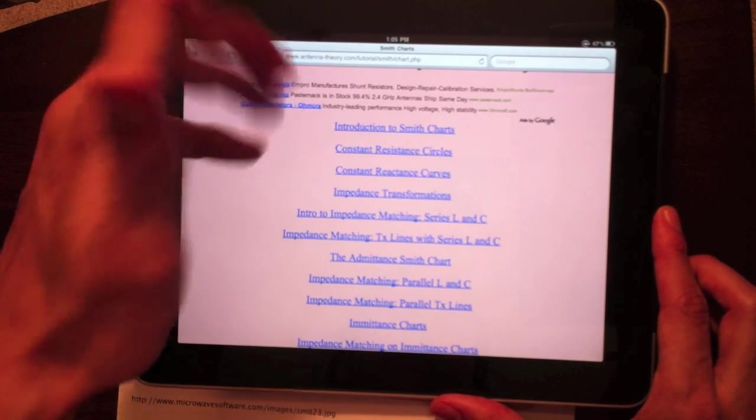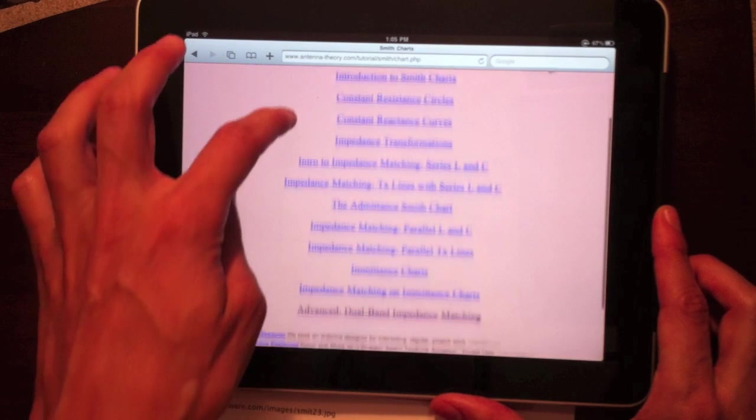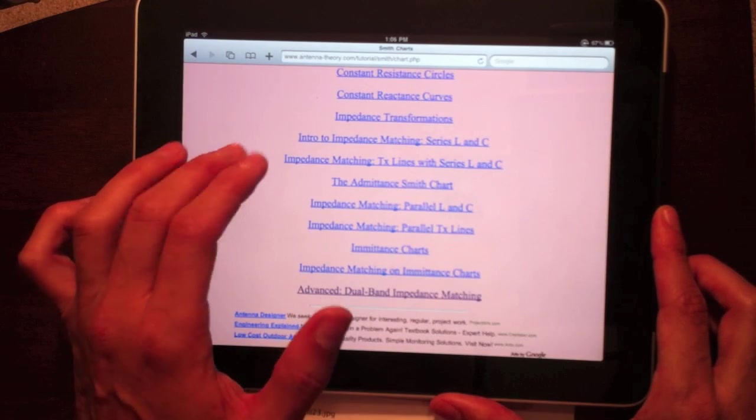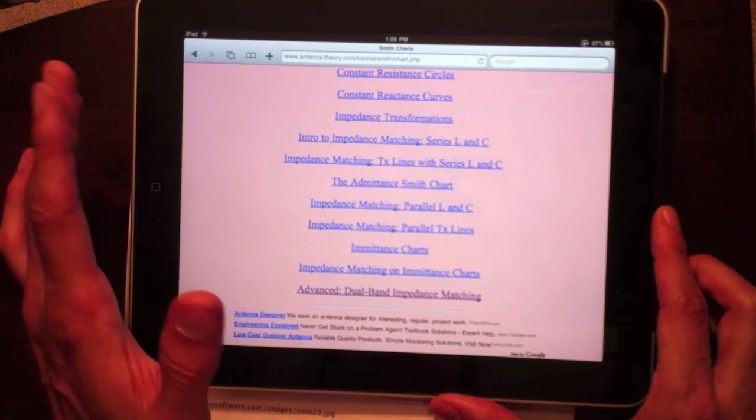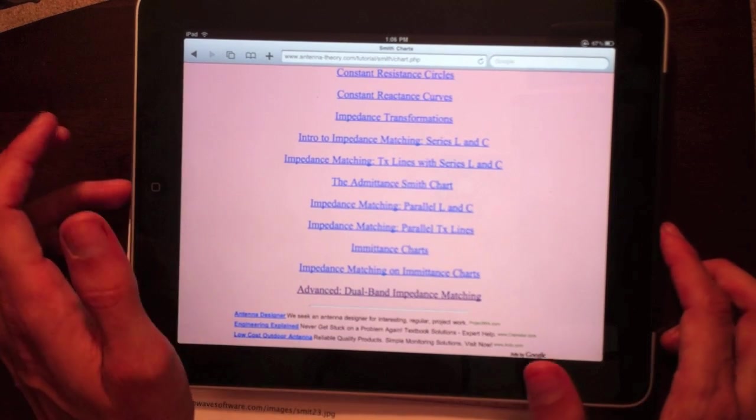I explain constant resistance circles and impedance transformation, and then get into impedance matching with series components, transmission lines, parallel components, and you can really understand where everything comes from.